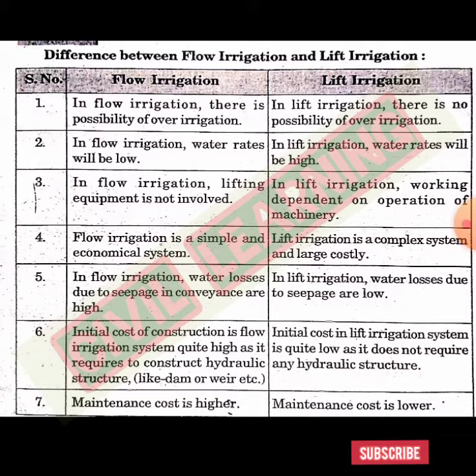In flow irrigation, water rates will be low because it involves horizontal flow. In lift irrigation, water rates will be high.